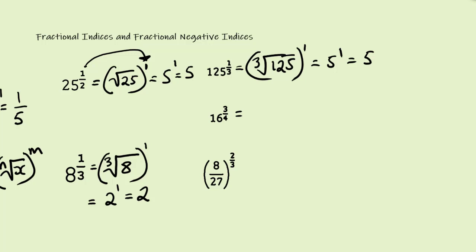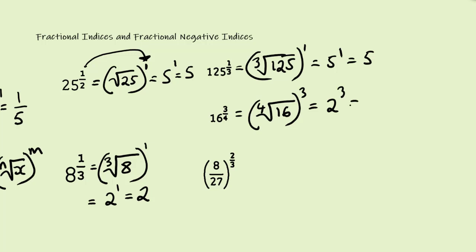Now we have 16 to the power of 3 over 4. The denominator 4 goes outside as a root, so we find the 4th root of 16, and the 3 goes outside as a power. The 4th root of 16 is 2, because 2 multiplied by itself 4 times gives us 16. Then we have 2 cubed, and 2 cubed is 8.